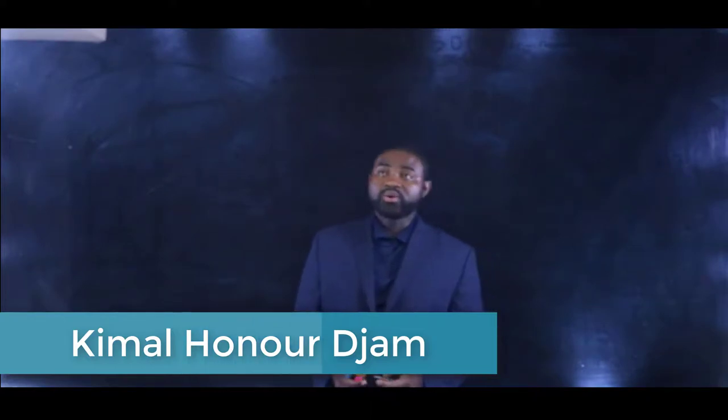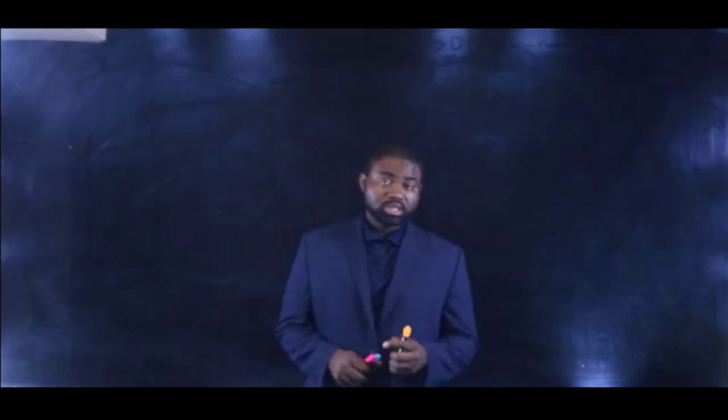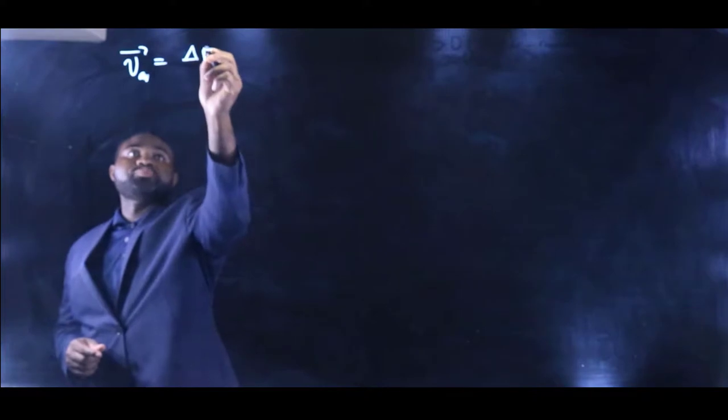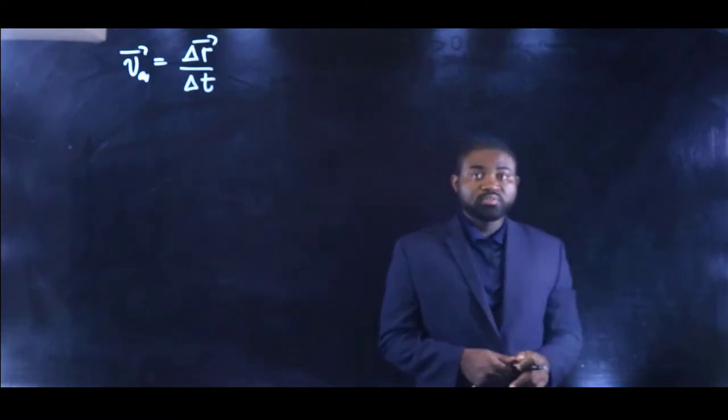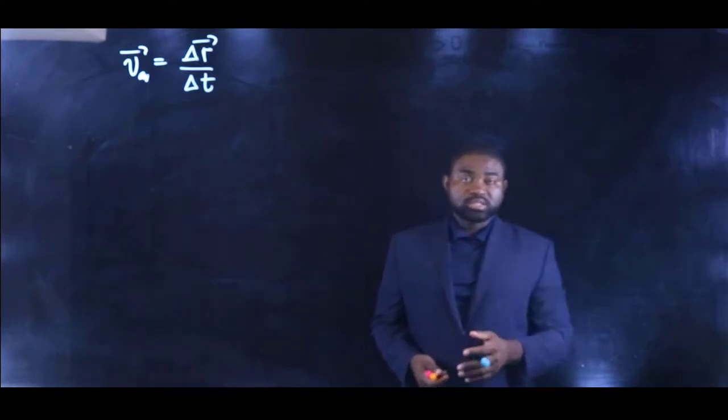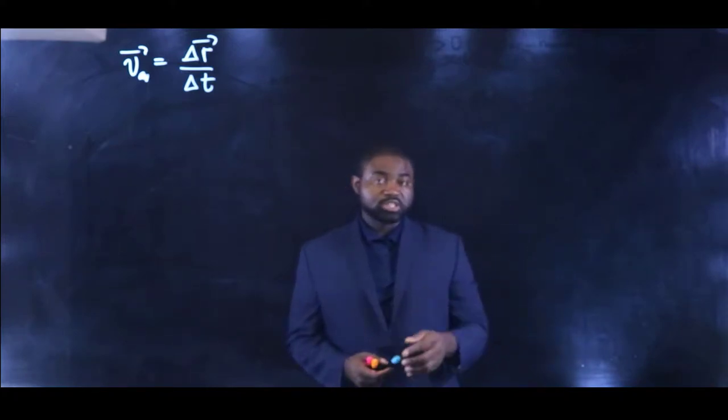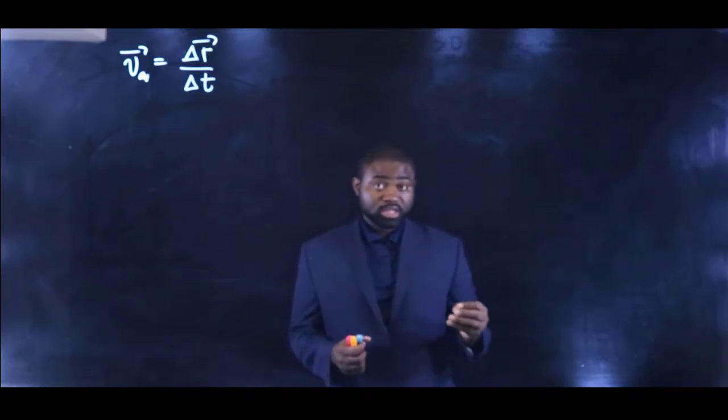In the last section of the lesson, we did talk about average velocity. We defined average velocity as the displacement of an object divided by the time interval — in other words, the change in position in a given direction divided by the time taken. So average velocity is written as V_average = Δx / Δt. We noticed that average velocity has the same direction as displacement and depends only on the initial and final points.